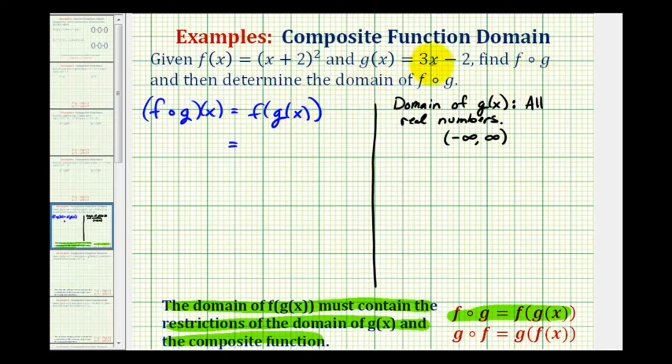And since g of x is equal to 3x minus 2, we'll perform this substitution for g of x. So this will become f of the quantity 3x minus 2. So notice how 3x minus 2 becomes the input into function f. And since f of x is equal to the quantity x plus 2 squared, this becomes the quantity 3x minus 2 plus 2 squared.